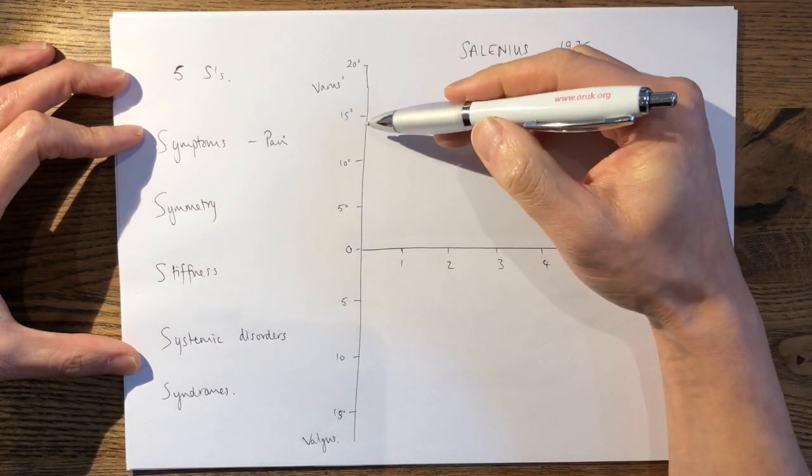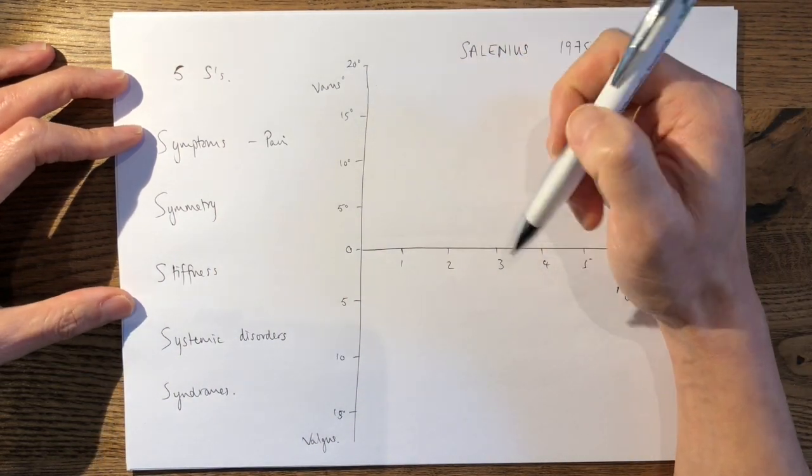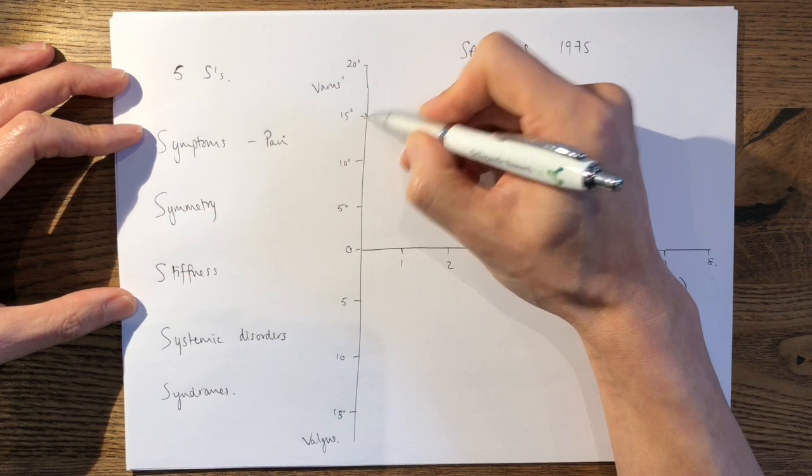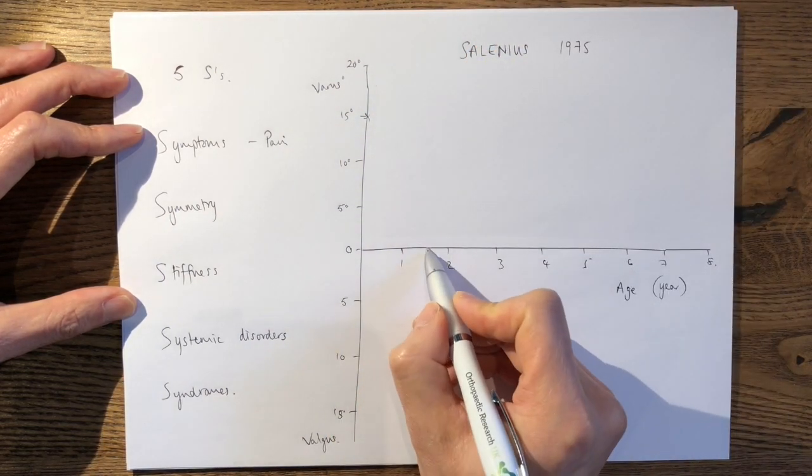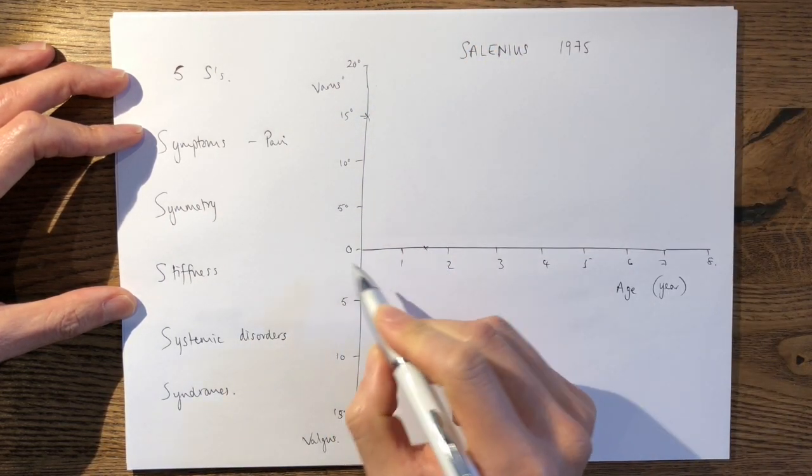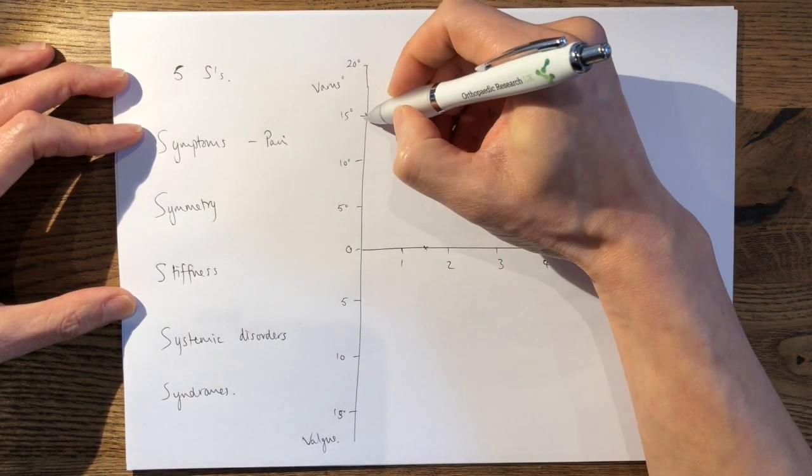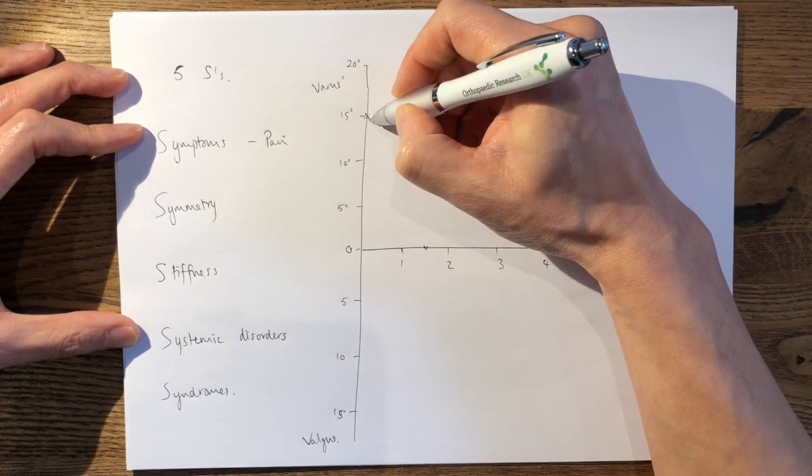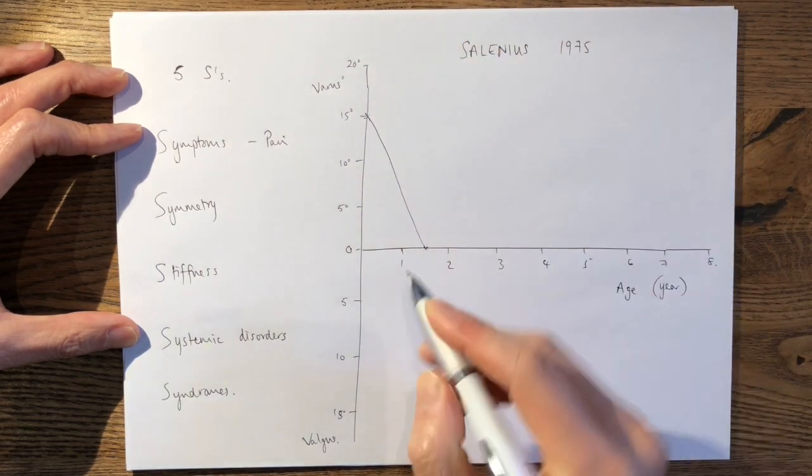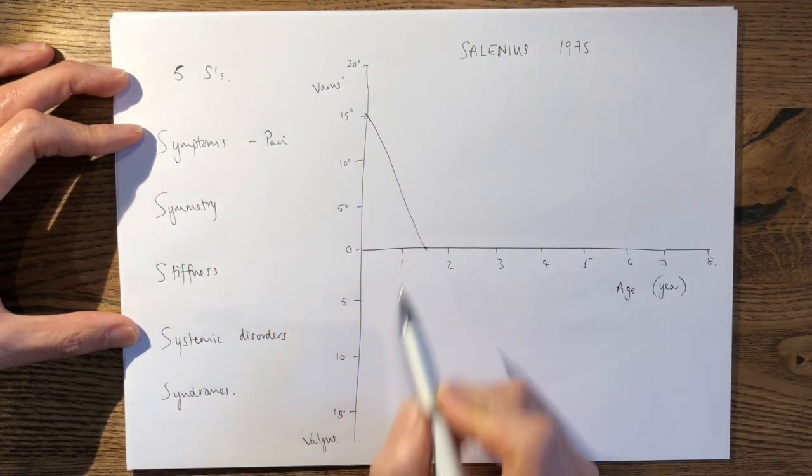So he explained that at birth, the typical varus angle would be at 15 degrees. However, when they reached approximately 18 months, they would eventually go to neutral. So varus at 15 degrees, at 18 months they'd go to neutral.